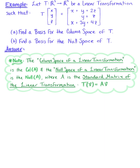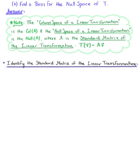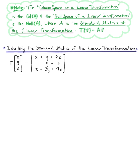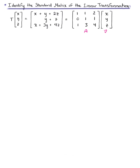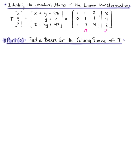So with this in mind, the first thing we need to do is identify the standard matrix of this linear transformation. Looking at our given linear transformation, we can rewrite this as the matrix transformation where we have the 3×3 matrix: [1, 1, 2; 0, 1, 1; 1, 3, 4] multiplied by the vector in R³ with components x, y, z. So this 3×3 matrix A, multiplied by our vector v in R³, is our standard matrix of the linear transformation, which we will now use to find a basis for the column space.